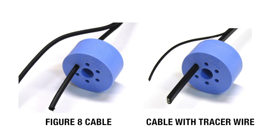remove the tracer wire or ground wire from the portion of the cable that will be positioned in the grommet and insert the cable into the grommet.